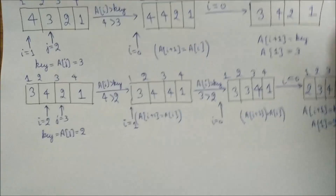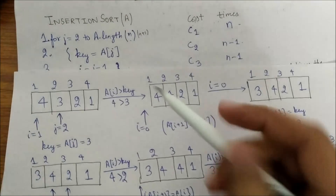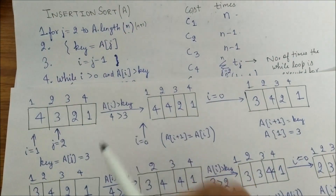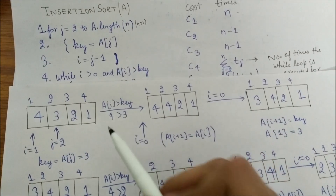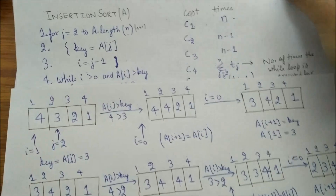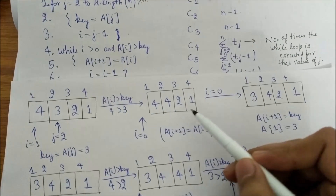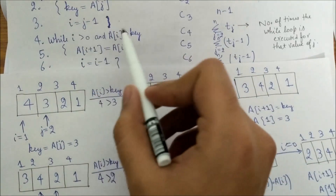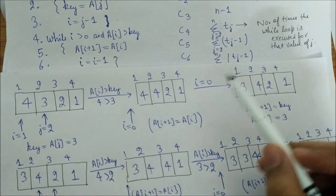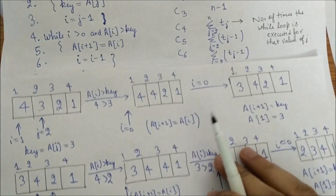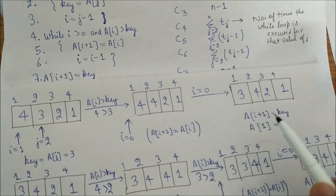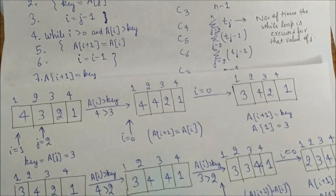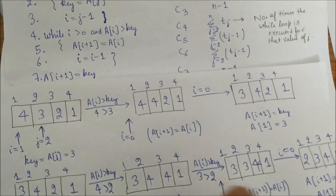Revisiting the pseudocode: for each j we assign key = a[j] and check if a[i] > key. For j=2 on a reversely sorted array, 4 > 3, so we shift elements (a[i+1] = a[i]) and decrement i. When i reaches 0 the while loop breaks, and a[i+1] is set to key. The while loop executed 2 times when j=2.